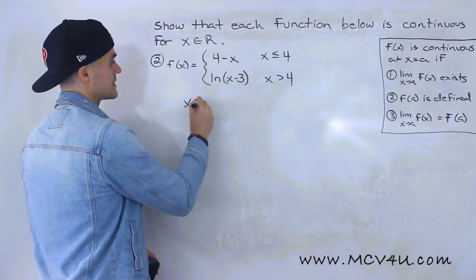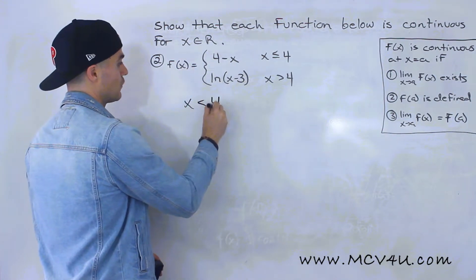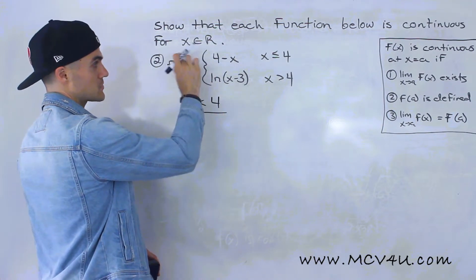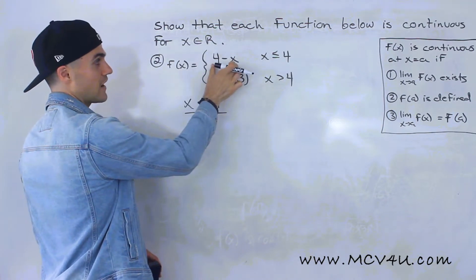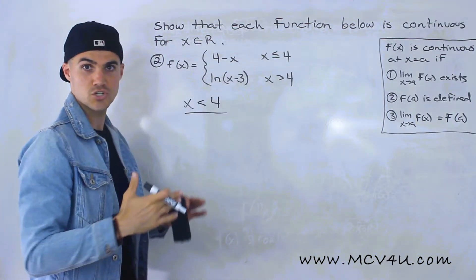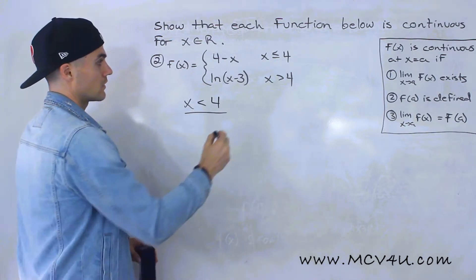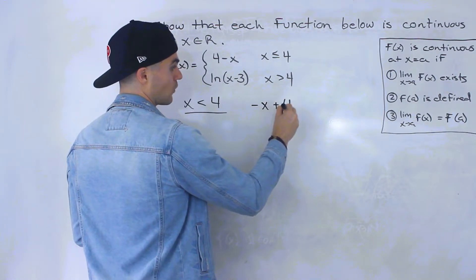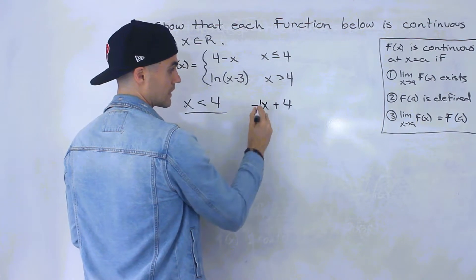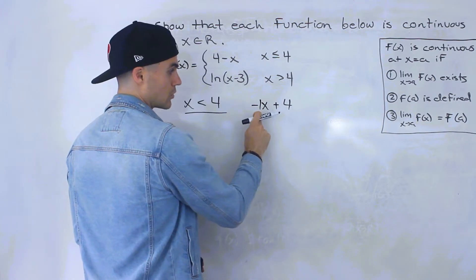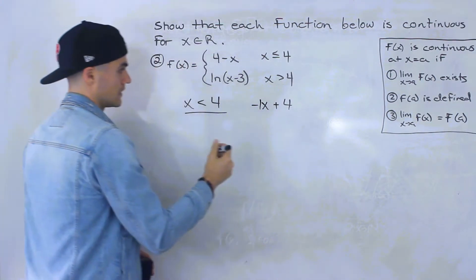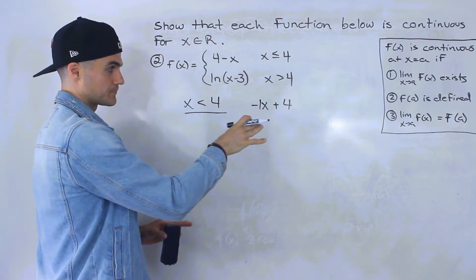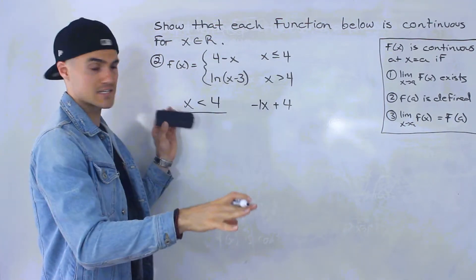First, let's start with x less than 4. When x is less than 4, the piecewise function is defined by 4 minus x, which is just a line — negative x plus 4, with a slope of negative 1. We know that this line has a domain of x ∈ ℝ.